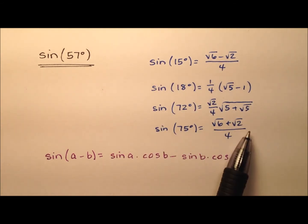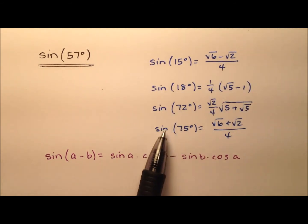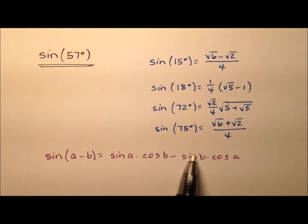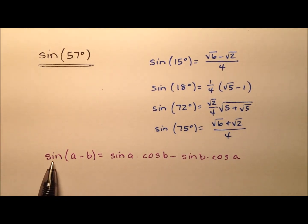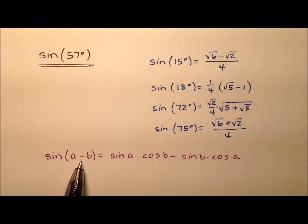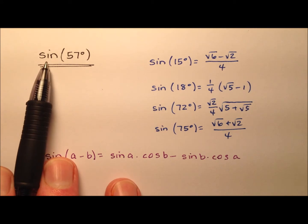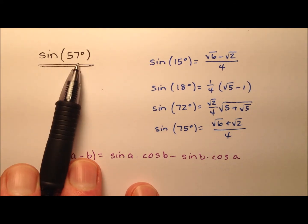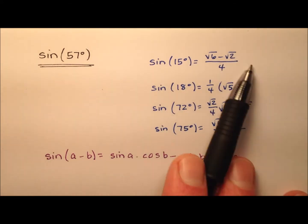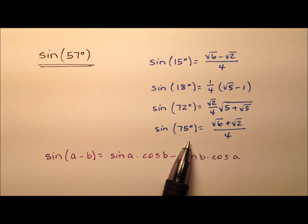These are probably much more interesting to view than this, because all we're going to do is throw some values into the sine identity and simplify our expression. At the end of this video you'll have the exact value for the sine of 57 degrees, but you'll notice most of the heavy lifting has been done previously in other videos.